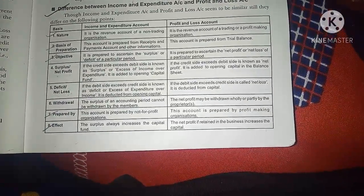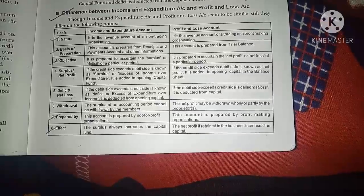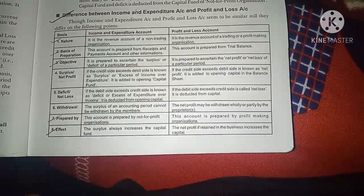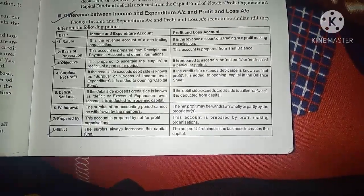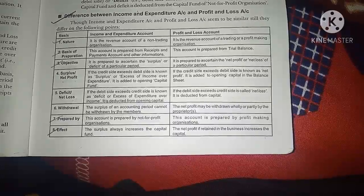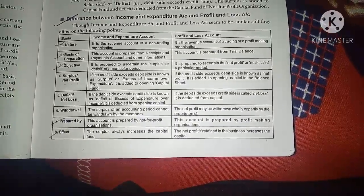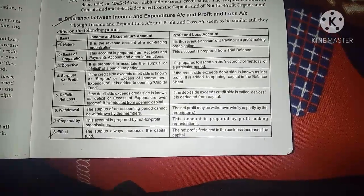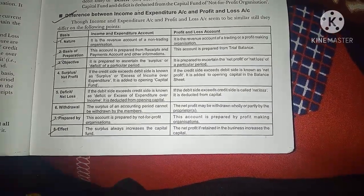The income and expenditure account is prepared by non-for-profit organizations, while the profit and loss account is prepared by profit-making organizations.